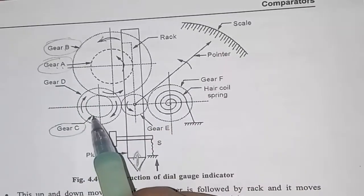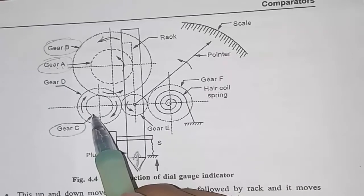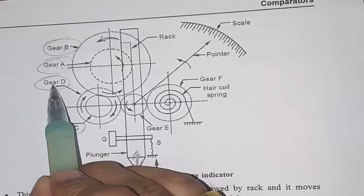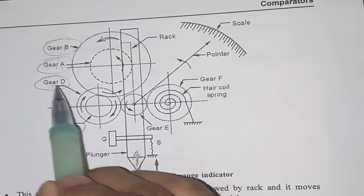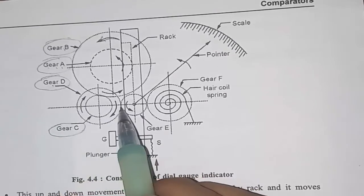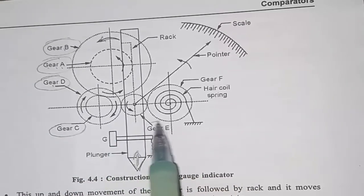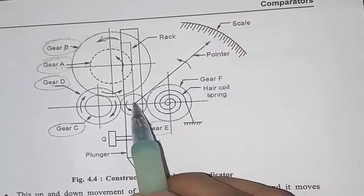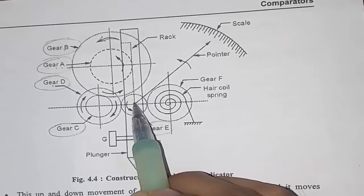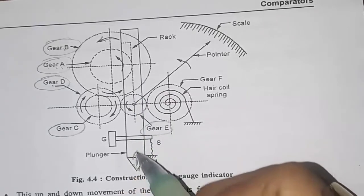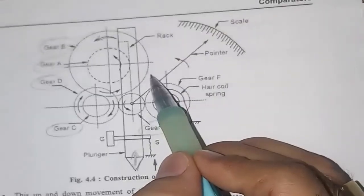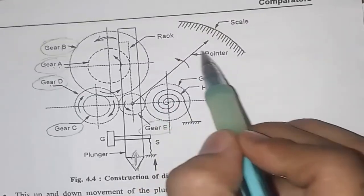Gear C is again part of a compound gear paired with Gear D. As Gear D rotates, Gear E also rotates, and the pointer is connected to Gear E. Magnification is thus provided through the rack and pinion and the series of gears.